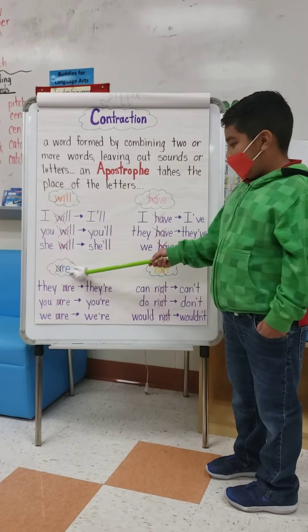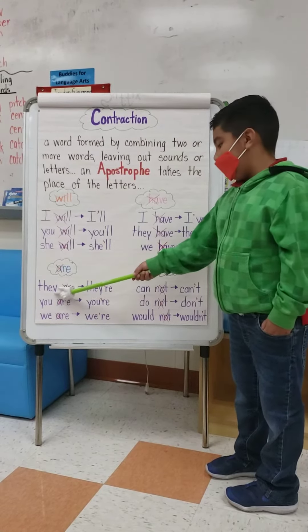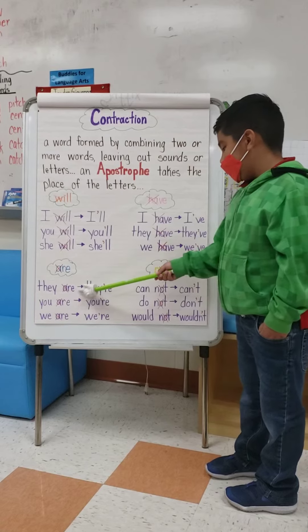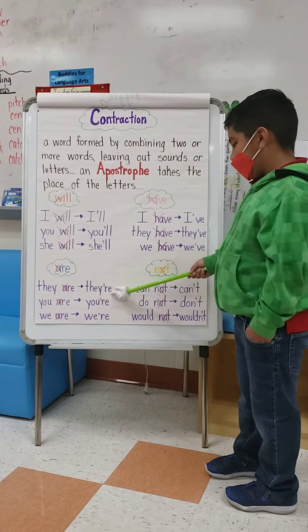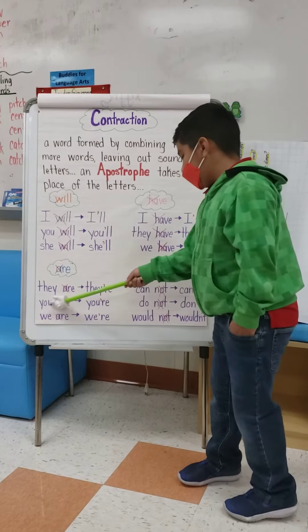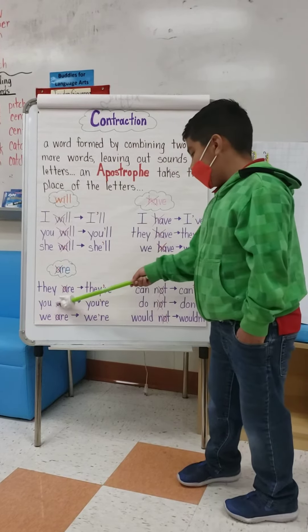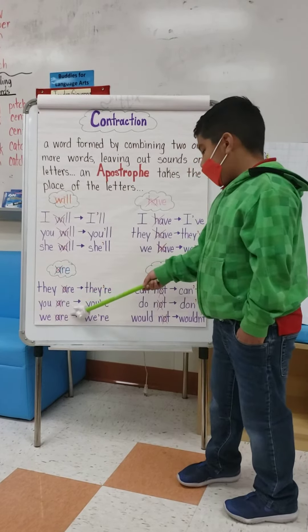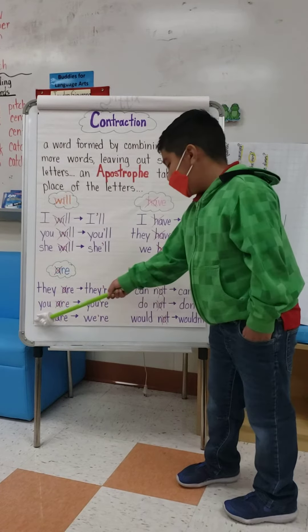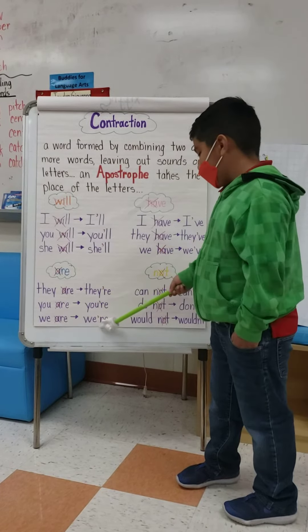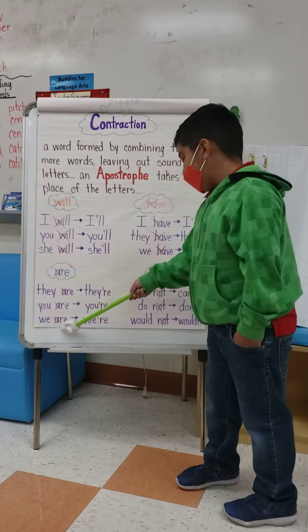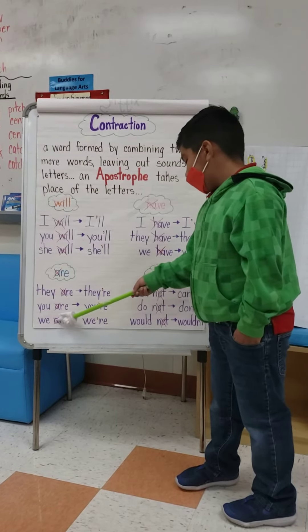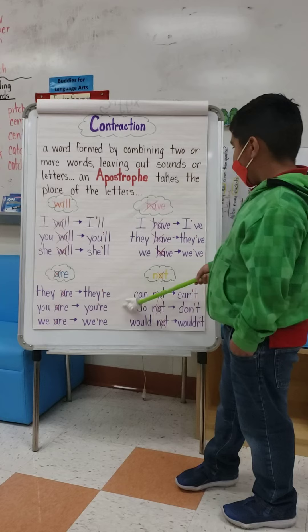Like the 'are' contractions: 'they are' turns into 'they're'. 'You are' — the H-A turns into 'you're'. 'We are' — the H-A turns into 'we're'.